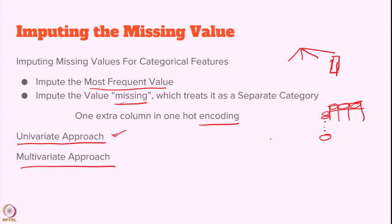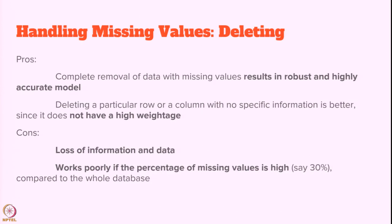This can be done for one attribute or multiple attributes, for one instance or multiple instances. Based on that, we have univariate and multivariate division — univariate is just one and multivariate is more than one. When handling missing values, you must see whether you are addressing a univariate or multivariate case, and choose the best approach accordingly.